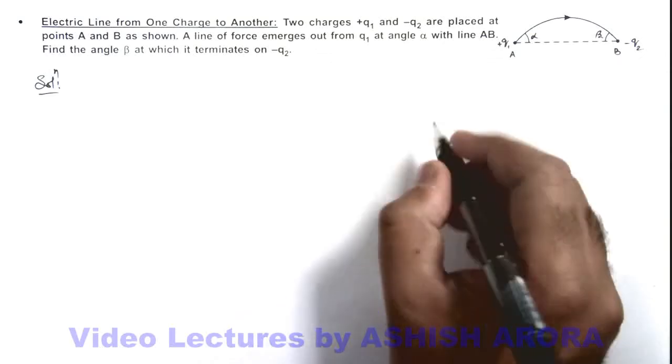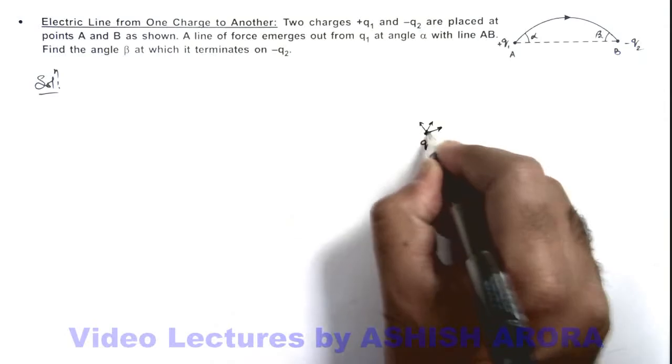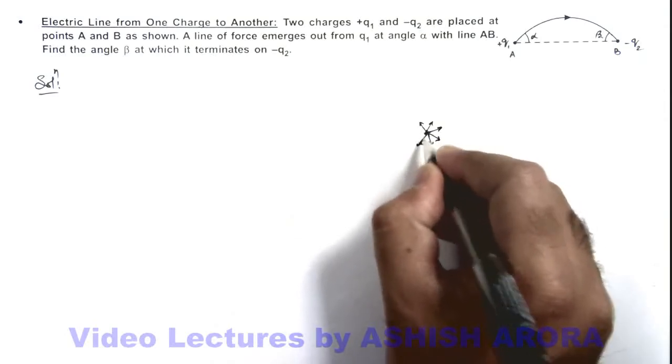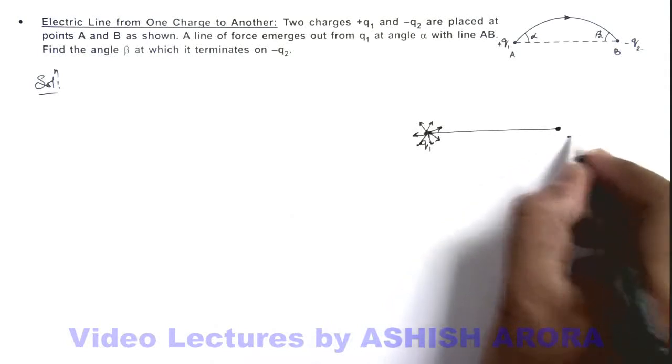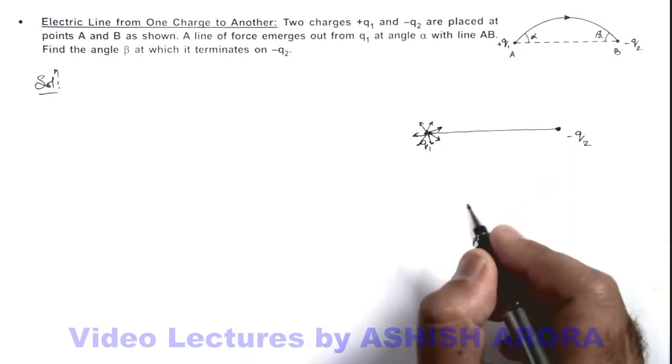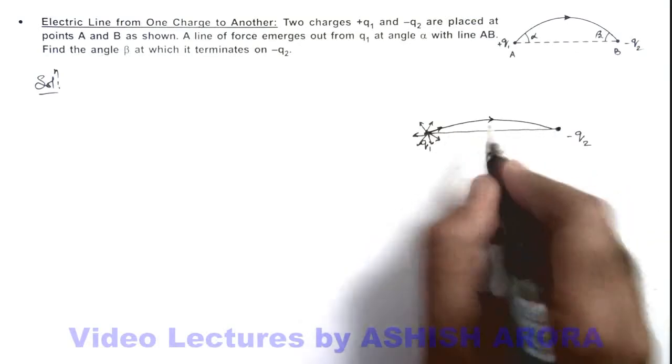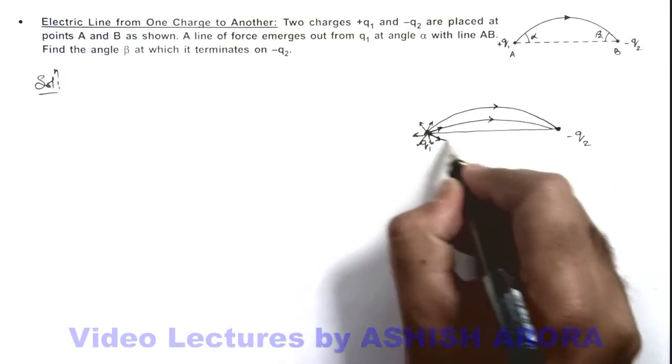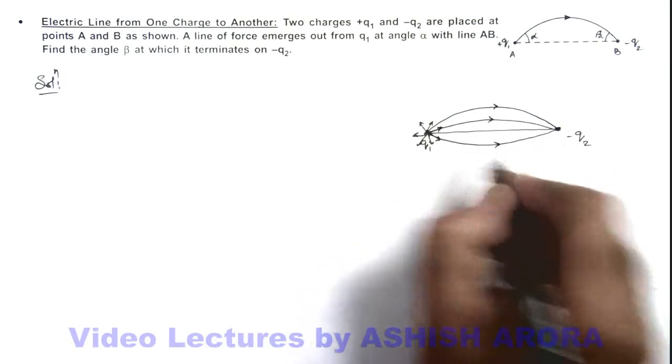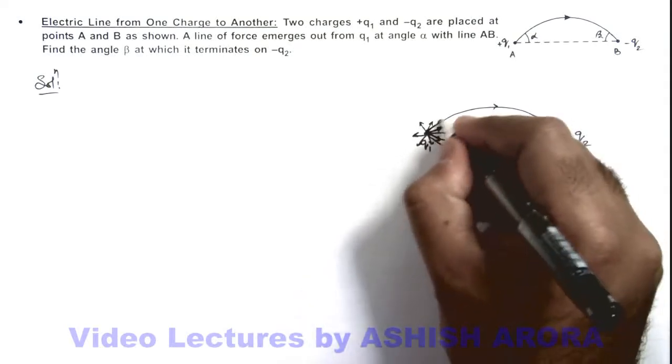From a charge q1, all electric lines are originating in radially outward direction like this. And at some distance charge minus q2 is there, so all the lines which are originated within a cone of a given solid angle will terminate on the charge q2 within another cone of some solid angle.